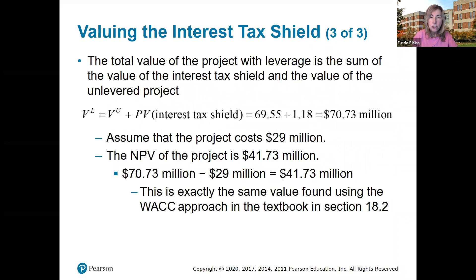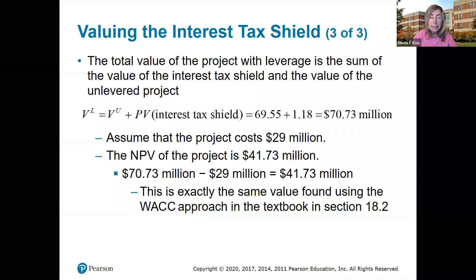So the total value of the project with leverage is the sum of the value of the interest tax shield and the value of the unlevered project: $69.55 plus $1.18 is $70.73 million. Assuming the project costs $29 million, the NPV of the project is $41.73 million — $70.73 minus $29 equals $41.73 — the exact value found by the WACC approach in the textbook in section 18.2.